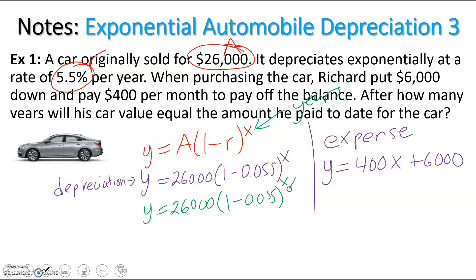And we have 1 minus 0.055, and we're going to change the x to x over 12. This equation will be in terms of monthly depreciation. The other one is annual or yearly.